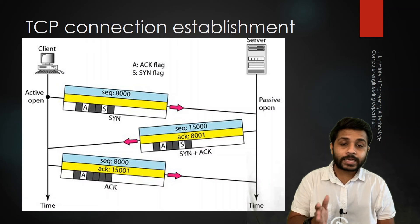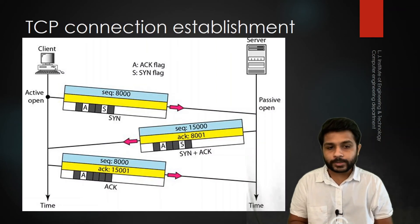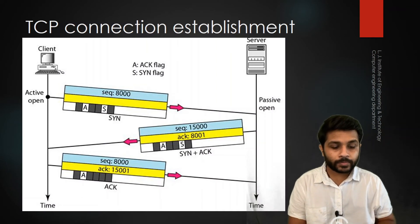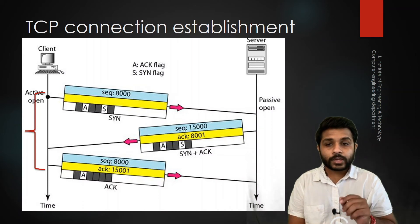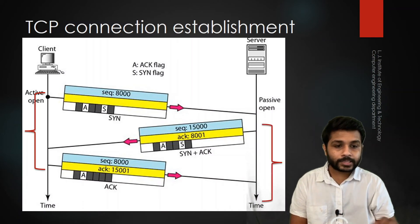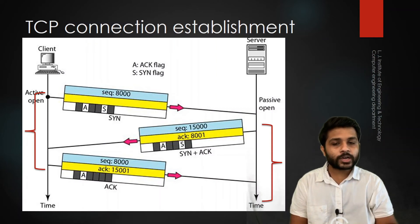After the connection is established, the next phase is data transfer. After data transfer is done, the last phase is connection termination. In this figure, the first part shows the connection established by the client and the second part shows the connection established by the server. Now let's see how the connection is terminated.